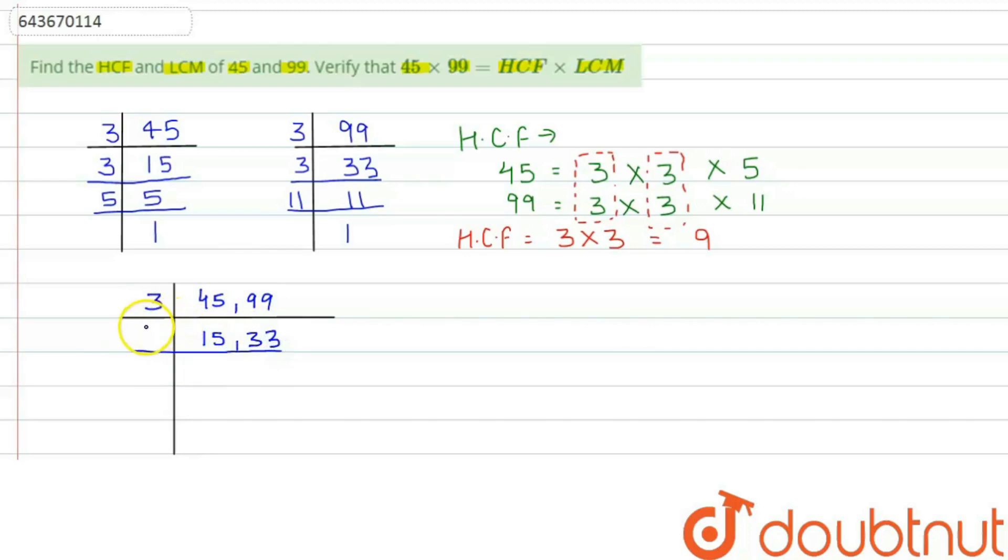Now again 15 is divisible by 3, we get 5, and here we get 11. Now 5 is divisible by 5 only. Similarly, 11 is divisible by 11. So the factors that we get here are: